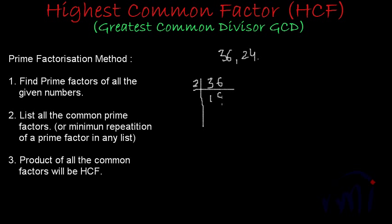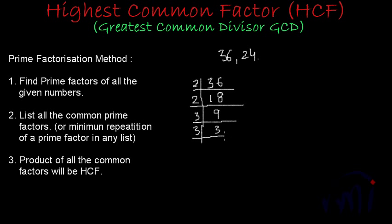so it will be divisible by 2. 2 × 18 = 36. Again, we have to divide it by 2 because 18 is also an even number. 2 × 9 = 18. Now we have 9 which is not divisible by 2 because it is an odd number, but it is divisible by 3. 3 × 3 = 9. So the prime factors of 36 are 2 × 2 × 3 × 3.